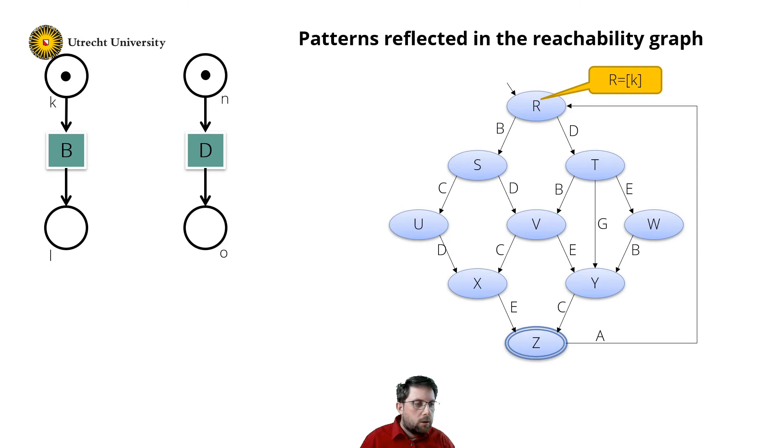Instead let's focus on a concurrent net. I get a result like this. Now state R resembles the marking KN, and state S the marking LN, and state T marking KO. In this net, I can complete a whole diamond over here. BD and DB.